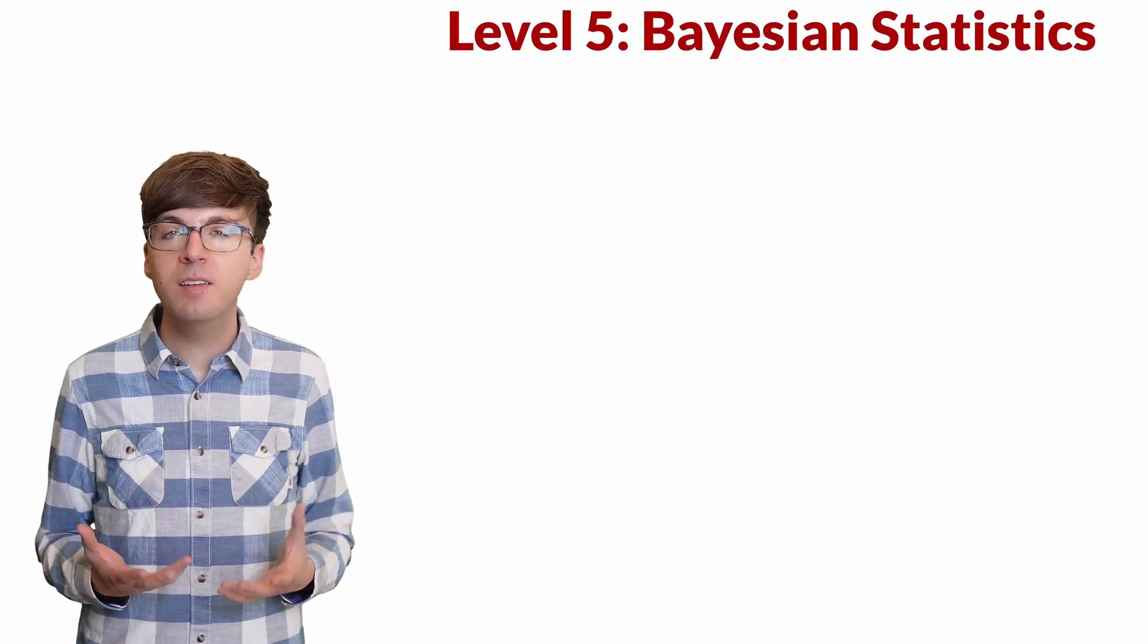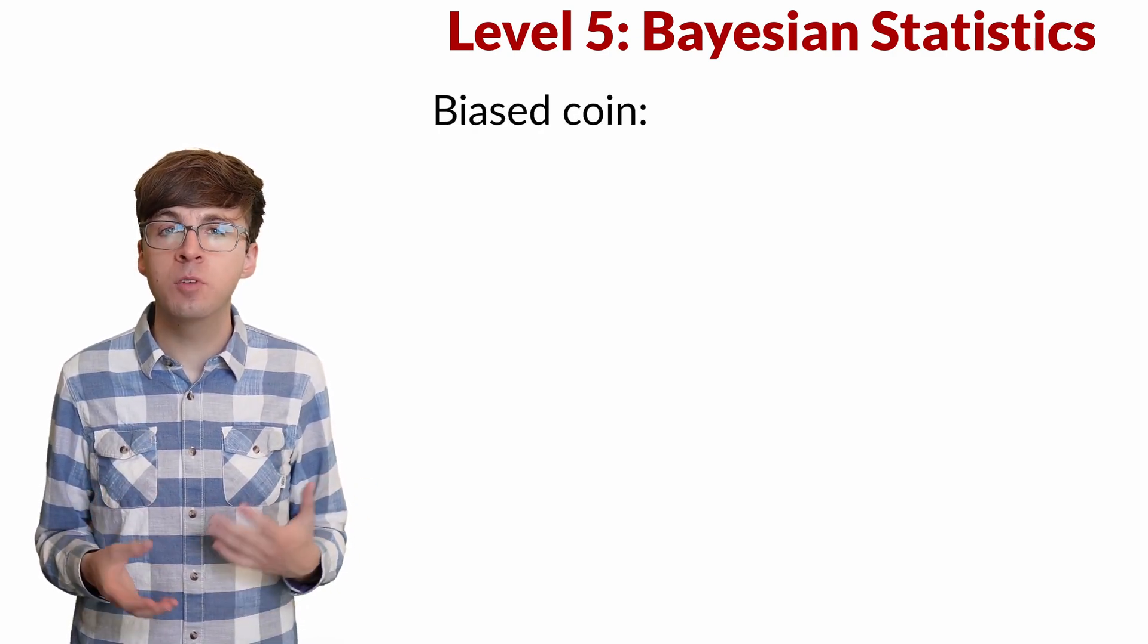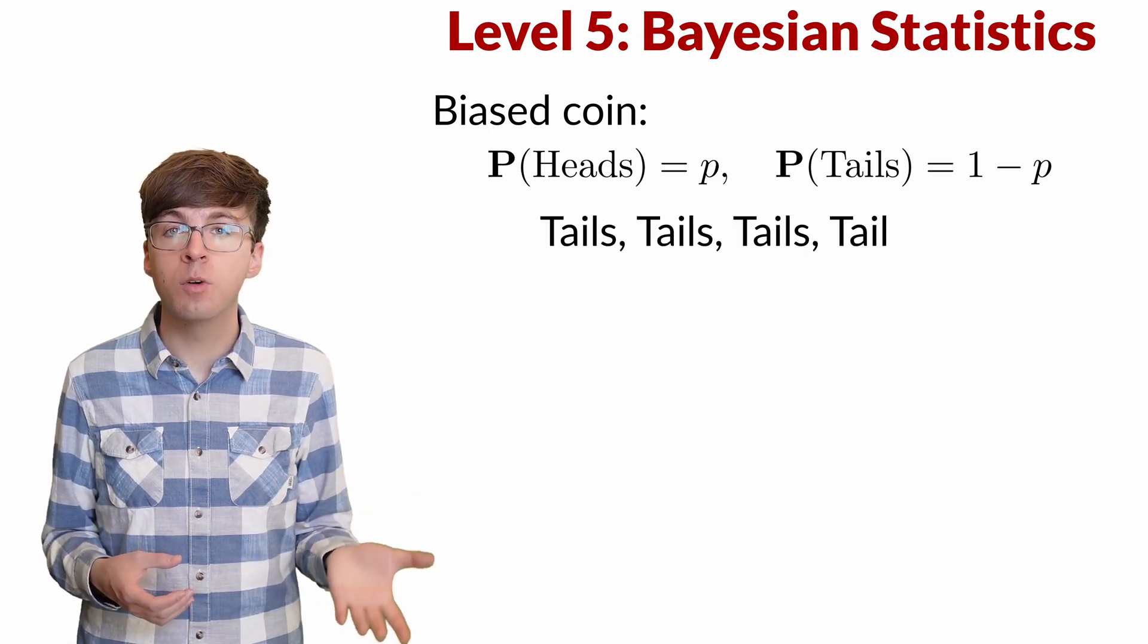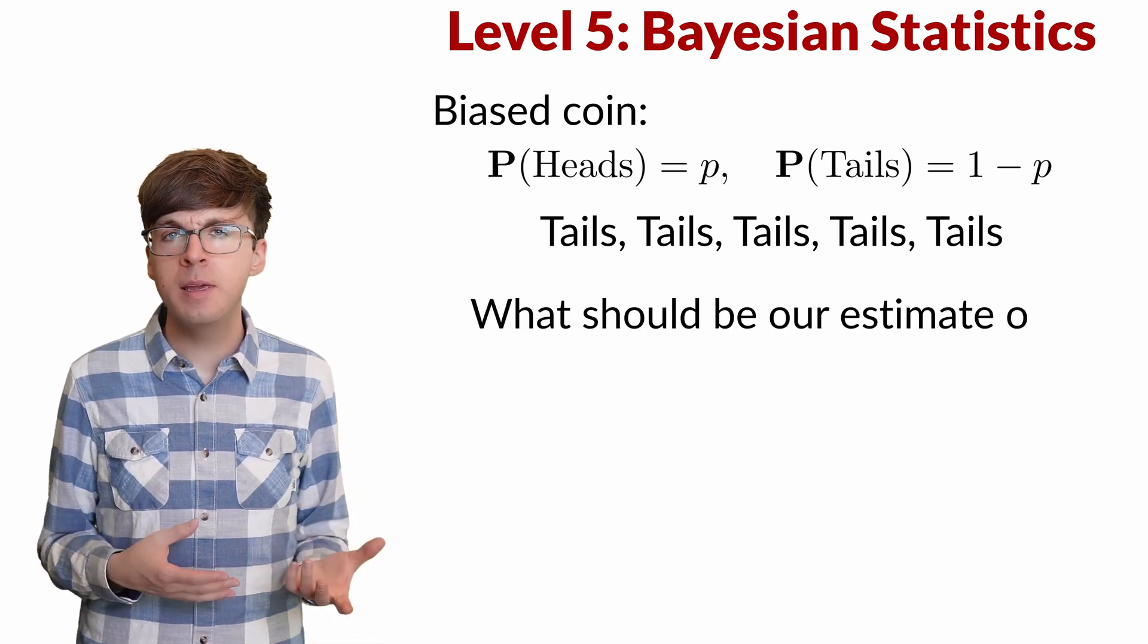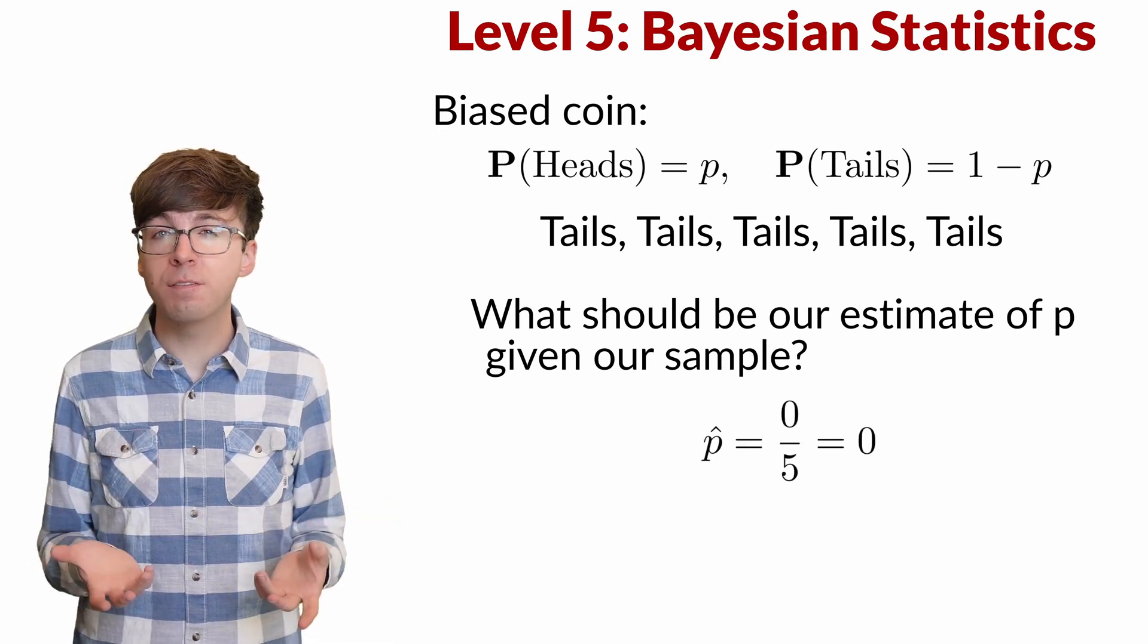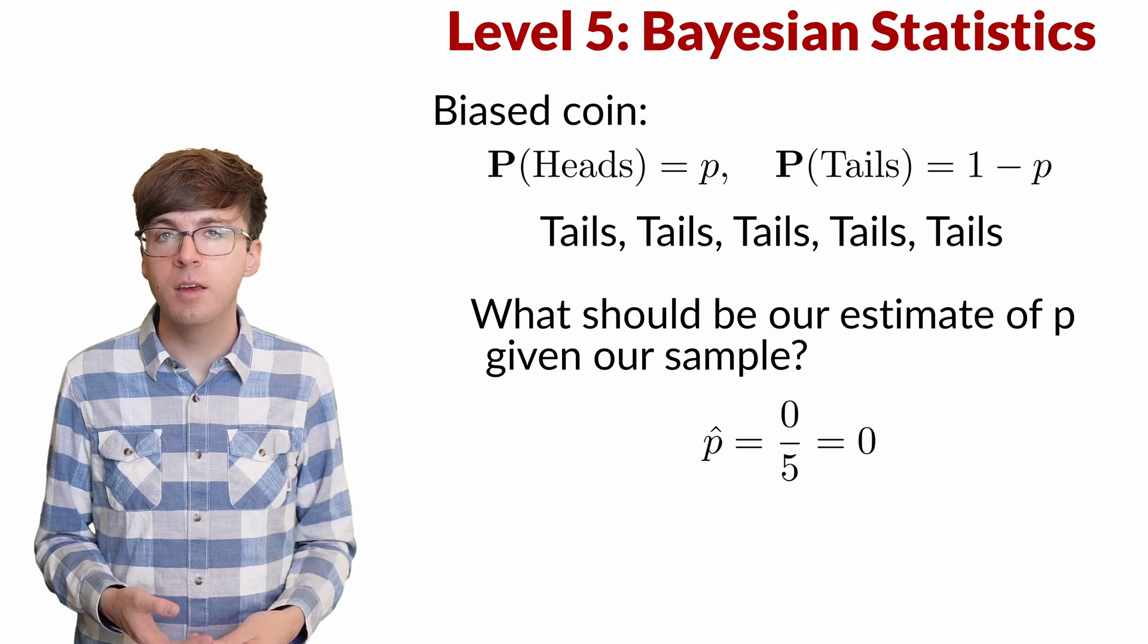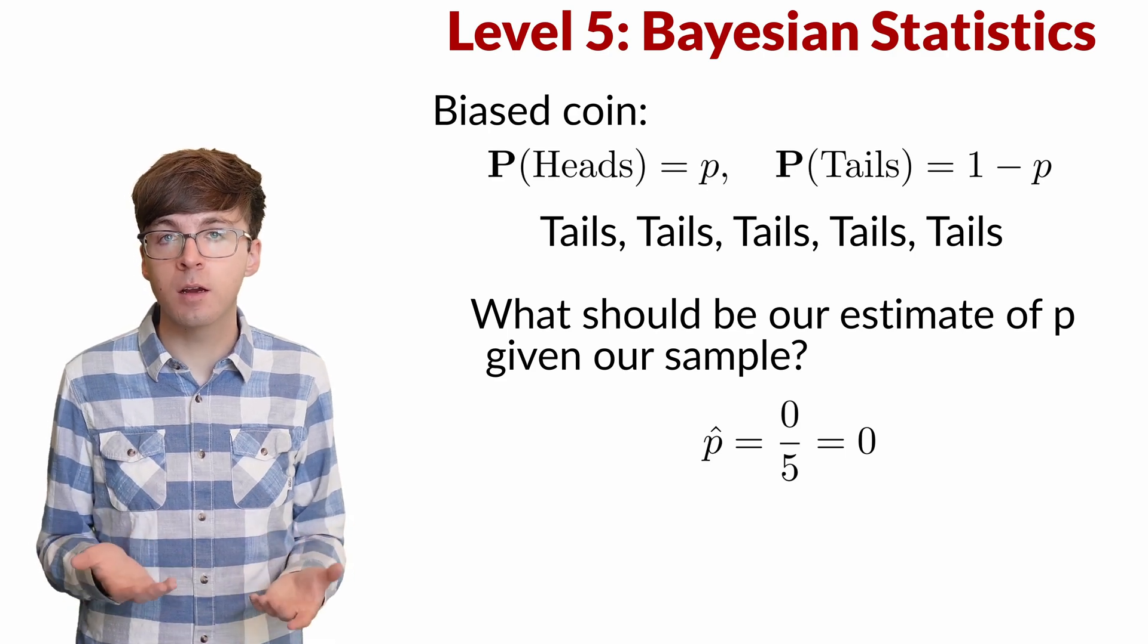For level five, let's see how Bayes' theorem allows us to make statistical inferences. Say we have a biased coin that comes up heads with probability p and tails with probability 1 minus p. We flip the coin five times to help determine the value of p. If we get tails all five times, what should be our estimate of p given our sample? One option is to say that zero out of the five flips were heads, so we'll just estimate p equals zero, meaning there's a probability zero that the coin comes up heads. But this is pretty extreme. It's possible that we just didn't flip the coin enough times to see it come up heads. So instead we can do Bayesian inference.